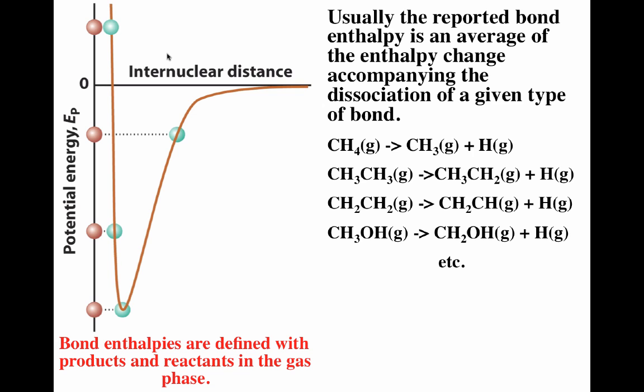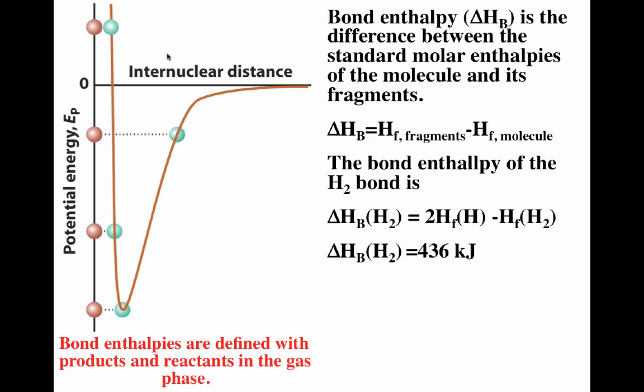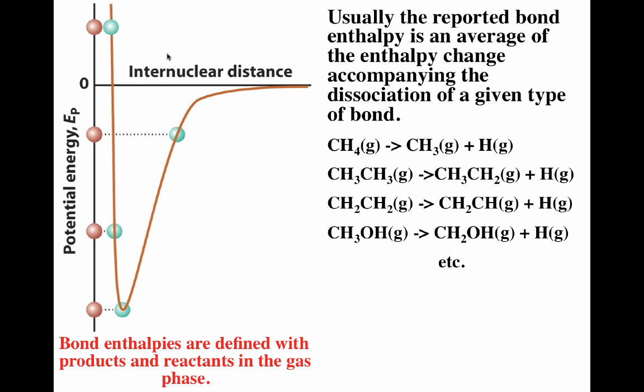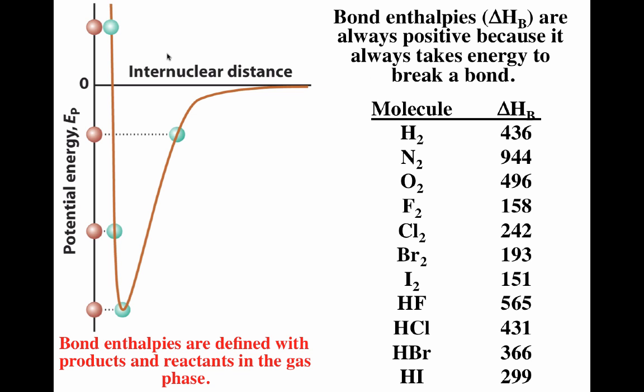For some bond enthalpies, there's only one type of molecule with that bond — for H-H, only H₂ has that bond. For other bonds, like the carbon-hydrogen bond, they're in many different types of molecules, so the bond enthalpy is actually an average over all those molecules. Bond enthalpies don't give you a very accurate answer for reaction enthalpy, partly because they are averages over a large number of molecules and also because they neglect things like intermolecular forces. Bonds found in only one molecule have more accurate enthalpies; bonds found in many molecules will be less accurate.